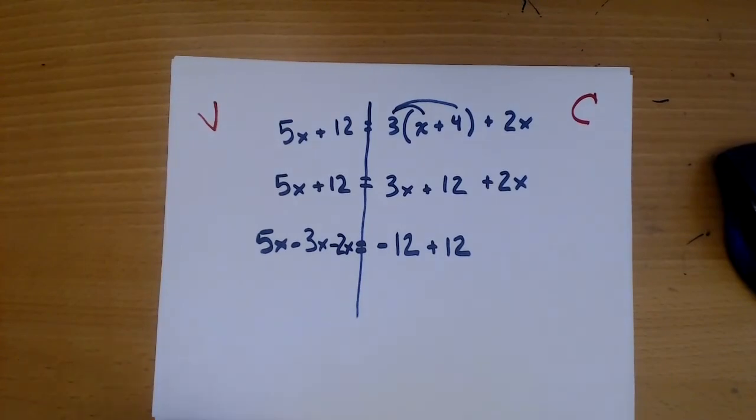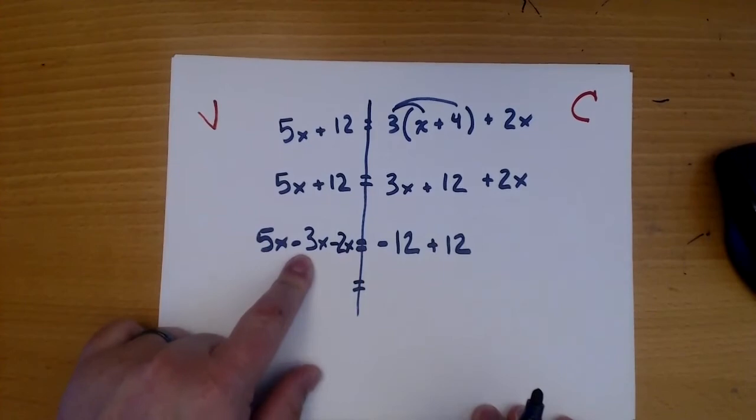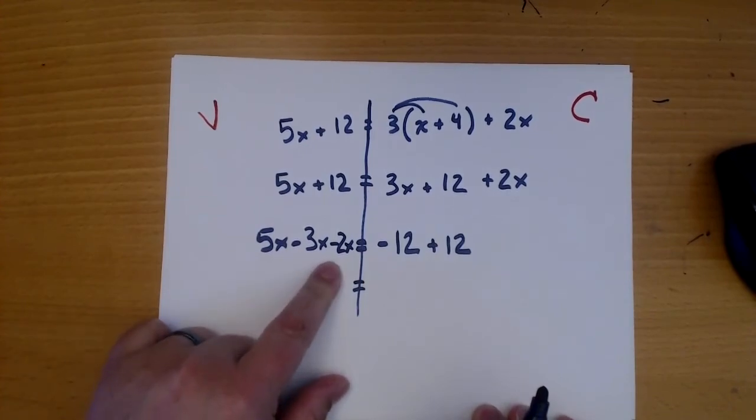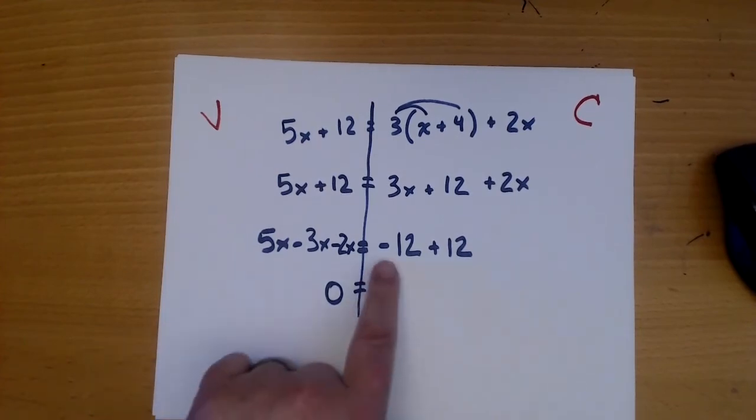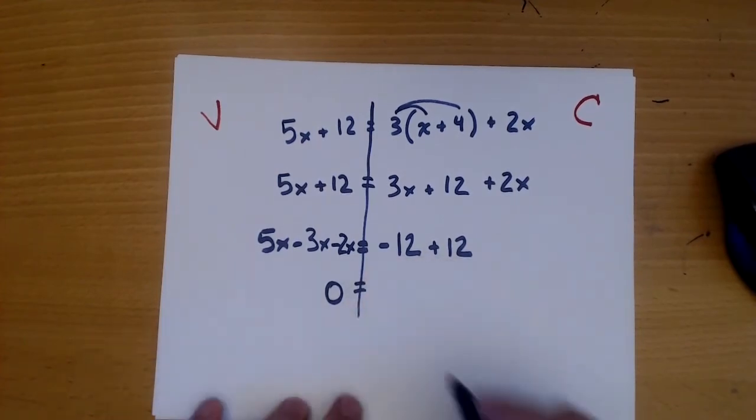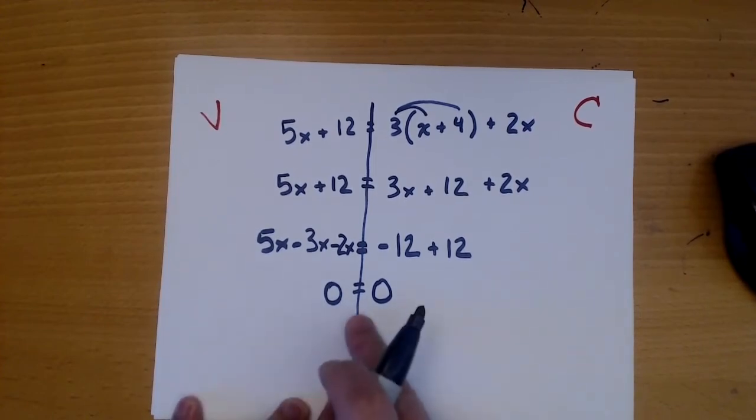Now we combine. 5 minus 3 minus 2 is 0. Negative 12 plus 12 is also 0. 0 is equal to 0.